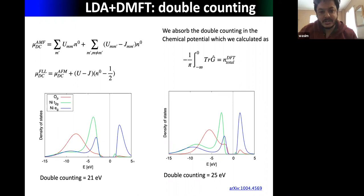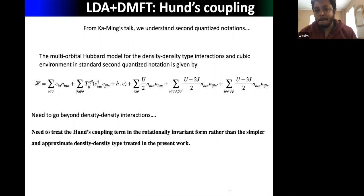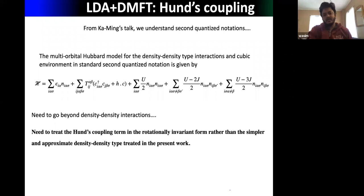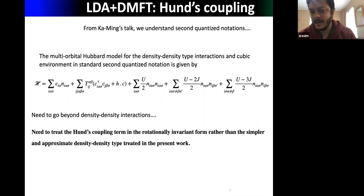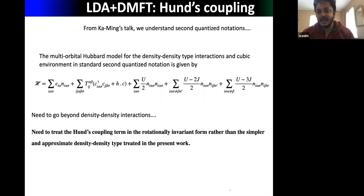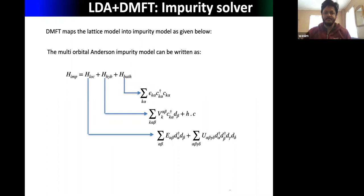Another improvement is Hund's coupling. In a multi-orbital Hubbard model, one usually considers simple density-density type interactions. But to improve calculations, you should treat J in a fully rotationally invariant manner. There is a lot of recent LDA+DMFT work on Hund's metals where accurately treating J is crucial.